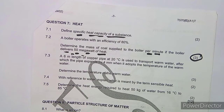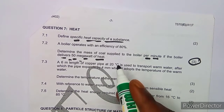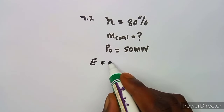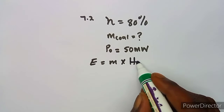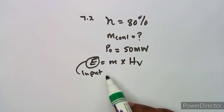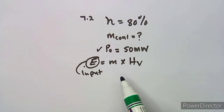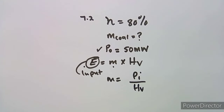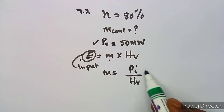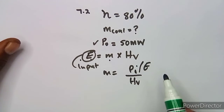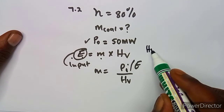To find the mass of coal, we use the formula that connects mass and energy: Energy equals mass times the heat value — this is the input. Since we have the output power, we can calculate the input power. Then mass equals input power divided by the heat value — that is, mass equals E over the heat value.